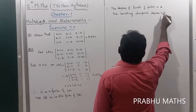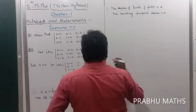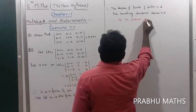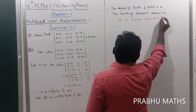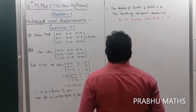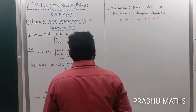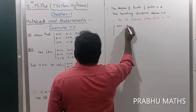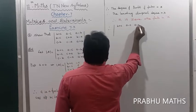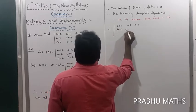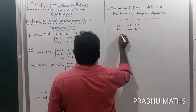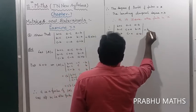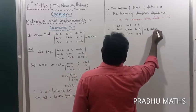The leading diagonal degree is equal to 3. Therefore M is 0, so the other factor is a constant K. Therefore the determinant of b plus c, a minus c, a minus b, b minus c, c plus a, b minus a, c minus b, c minus a, a plus b is equal to K times abc.